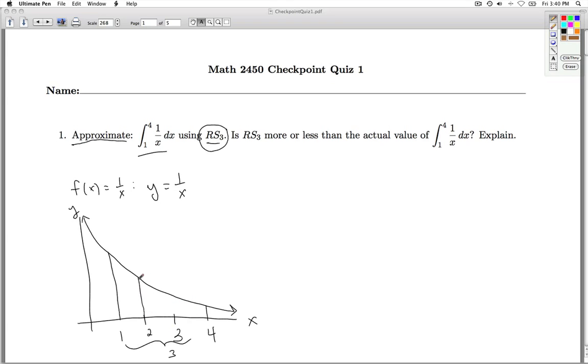And we're going to chop then this area up into three pieces, and we're going to approximate this area by looking at the area of rectangles. Now, RS3, since we're using the right endpoint, we're going to look at the right endpoint of each of these three subintervals, and use that function value.